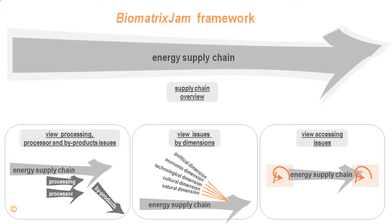The three perspectives of how we can look at the issues related to the supply chain from a systemic point of view are illustrated at the bottom of the screen. They can be categorized by processing, processor and by-products issues, by issues related to different dimensions, and by accessing or tapping issues. Let us now look at the overview of the energy supply chain and its various links and sublinks.